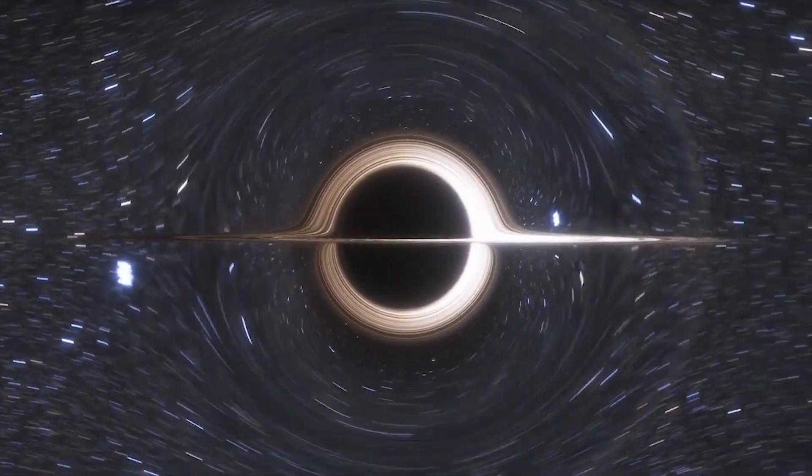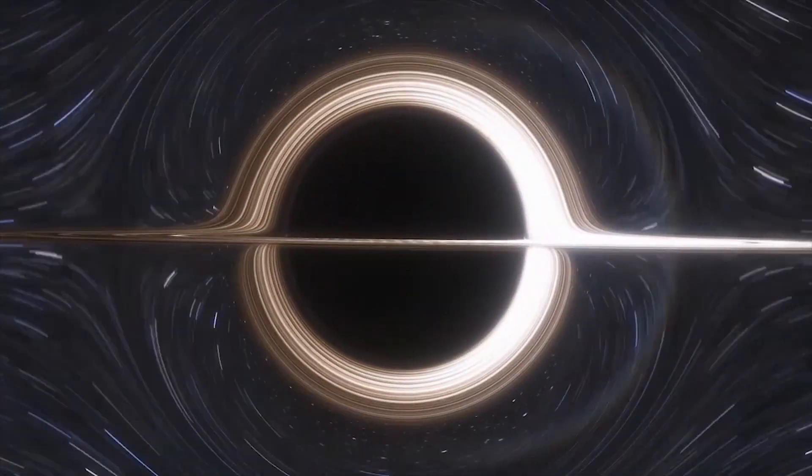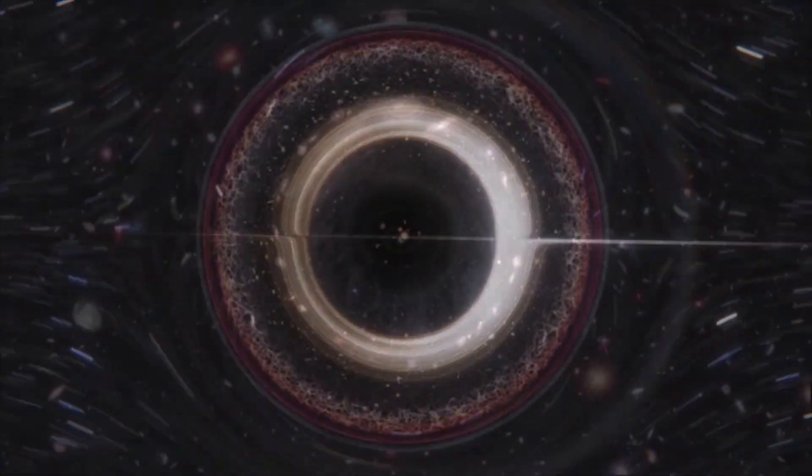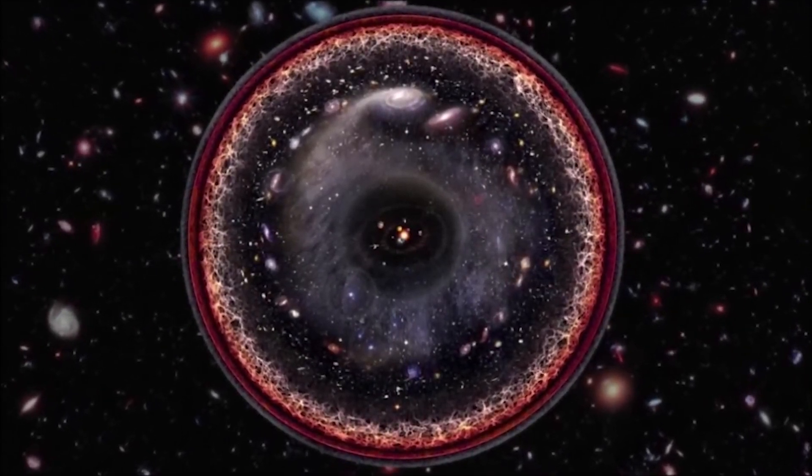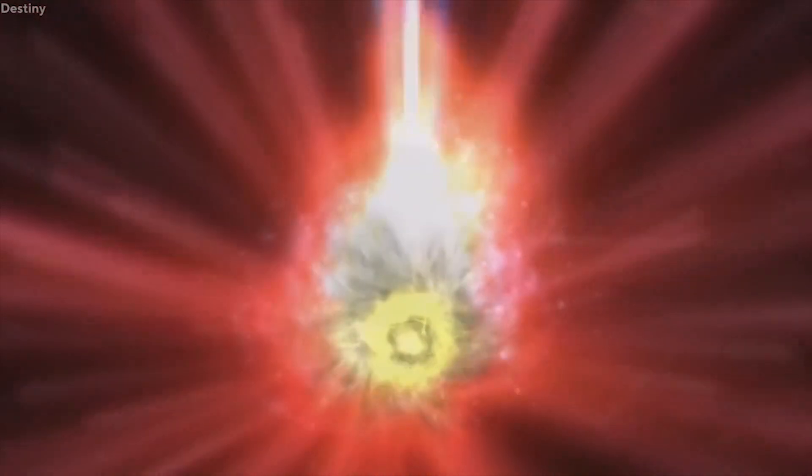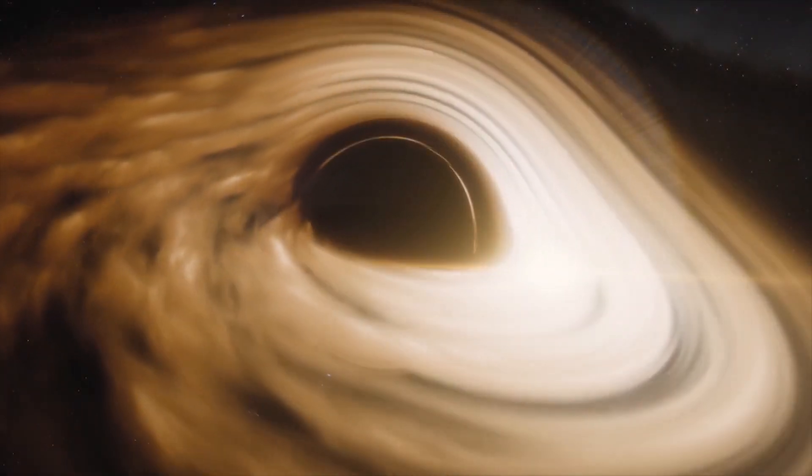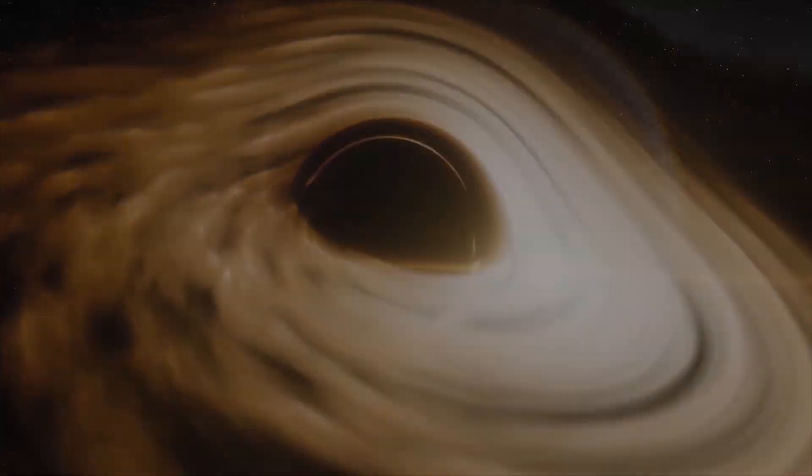To put it simply, TON 618 was born from the cataclysmic collapse of a colossal star, leaving behind an incredibly dense singularity and an event horizon that marks the boundary of its gravitational influence. It continues to grow in size by consuming matter from its galactic surroundings, becoming the colossal cosmic titan we marvel at today.